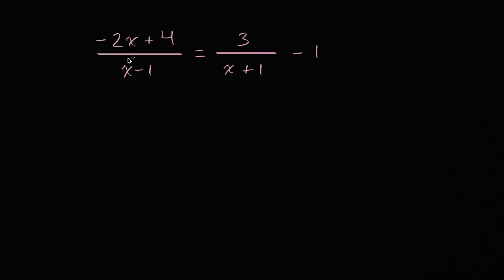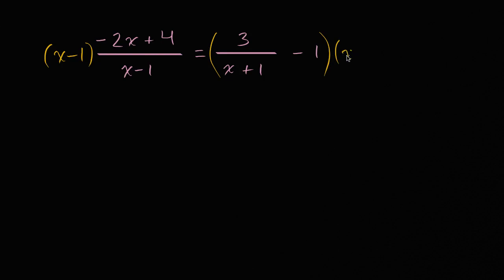When I see things in the denominator like this, my instinct is to try to not have denominators. To get rid of this x minus one in the denominator on the left-hand side, we can multiply both sides of the equation times x minus one. The whole point of doing that is to get rid of this x minus one in the denominator right over here.